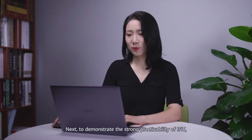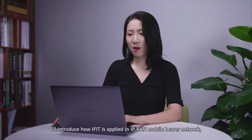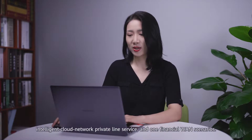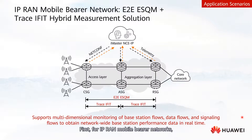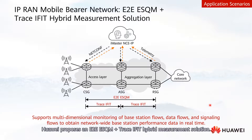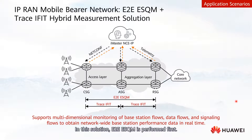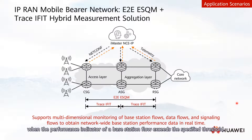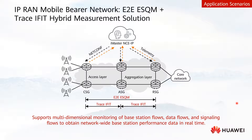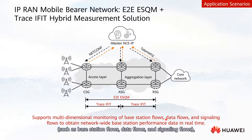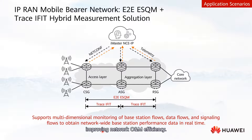To demonstrate the strong practicability of iFIT, here is how iFIT is applied in IP-RAN mobile bearer networks, intelligent cloud networks, private line services, and wide-area financial network scenarios. For IP-RAN mobile bearer networks, Huawei proposes an E2E ESQM plus hop-by-hop iFIT hybrid measurement solution. E2E measurement is performed first, and hop-by-hop iFIT is triggered when the performance indicator of a base station flow exceeds the specified threshold. Users can monitor detailed indicators of different service flows — such as base station flows, data flows, and signaling flows — and obtain network-wide base station data in real-time, improving network O&M efficiency.